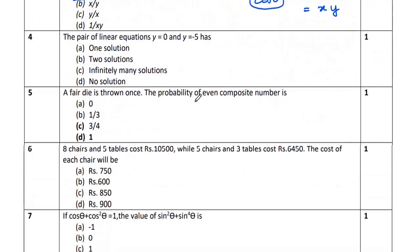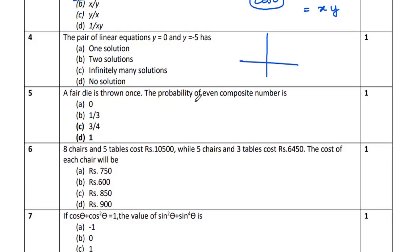Question 4: Two linear equations are given — y = 0 and y = −5. How many solutions do these have? Observe that y = 0 is a horizontal line at the x-axis and y = −5 is a horizontal line below it. They are parallel to each other, and parallel lines have no solution. So the correct option is D.